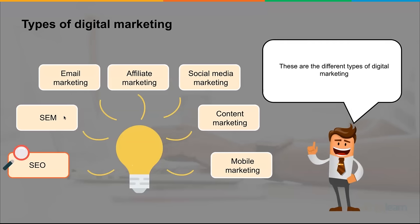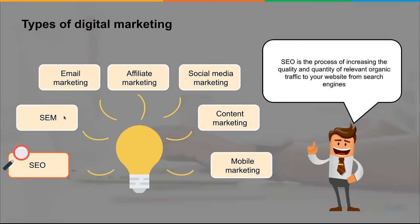The first channel is what I consider the king of them all — SEO, search engine optimization. There's also search engine marketing, email marketing, affiliate marketing, social, content, and mobile. Starting with SEO: it's basically increasing the quality and quantity of relevant organic traffic on search engines, including Google. In the US market, Google has a large market share, so you want your website pages to be found and clicked on organically. If somebody types in a keyword, you want that relevant page to show up first on Google so somebody can click on it.